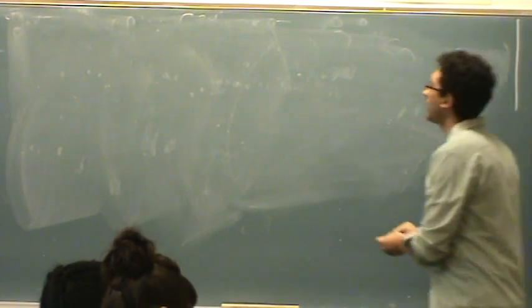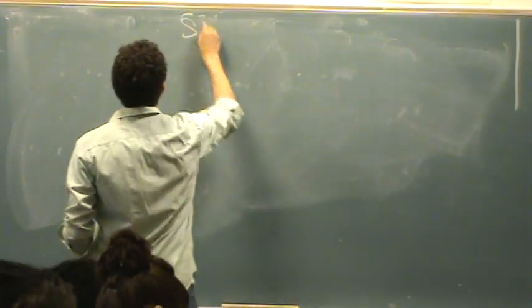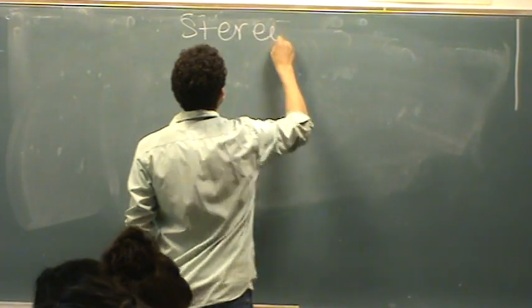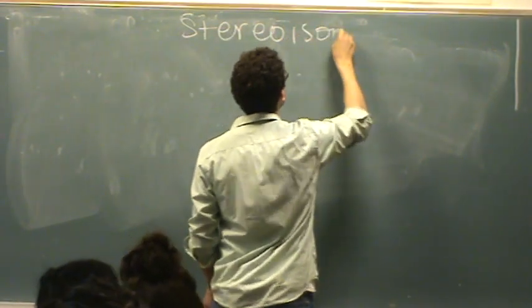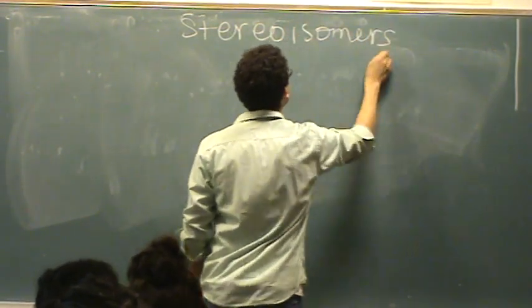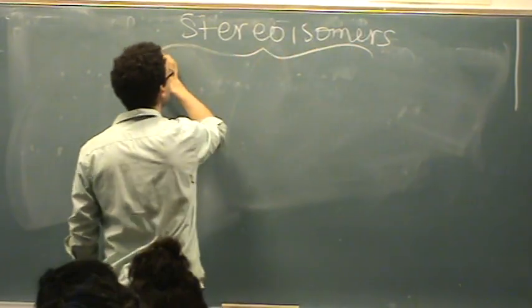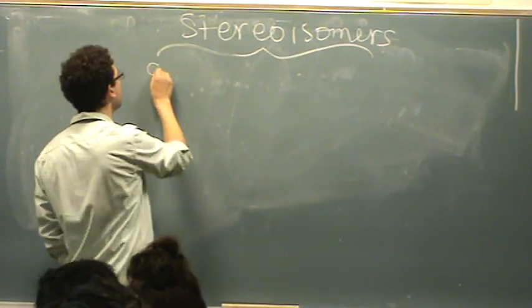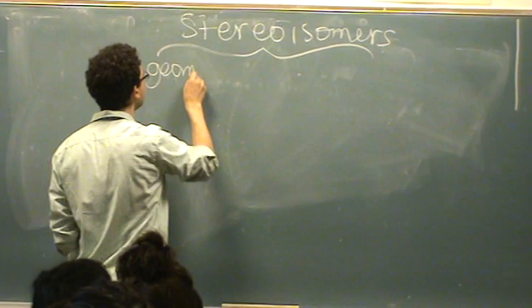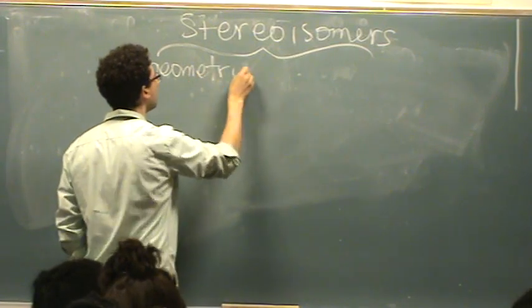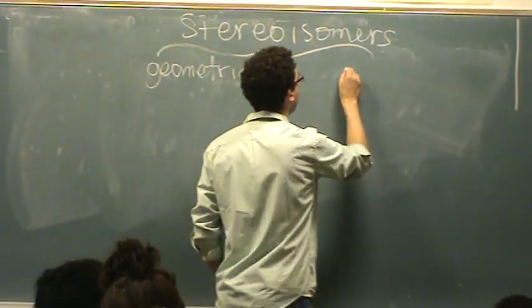Okay, so you have stereoisomers. These have two families of stereoisomers, the geometric and the optical.